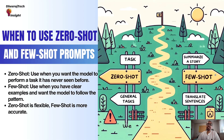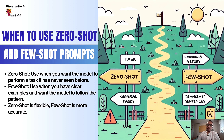Zero-shot is great for tasks the AI hasn't seen before and can handle general tasks like summarizing a story or answering a question. Few-shot is best when you want the AI to follow a certain pattern — like translating sentences, or categorizing and classifying data, as we saw in our example of classifying prompts as clear, unclear, or needs improvement. Zero-shot is flexible, but few-shot gives more accurate results because the AI has examples to learn from.